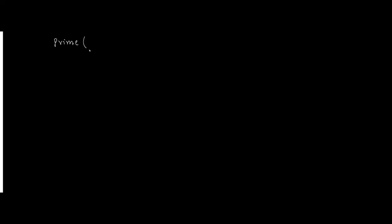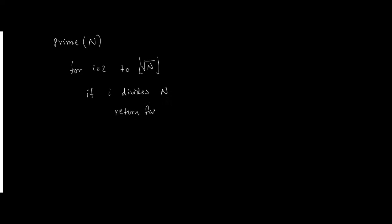Naive primality testing: to determine if n is prime, iterate i from 2 to sqrt(n). If i divides n, return false. If no such i is found, return true (n is prime).